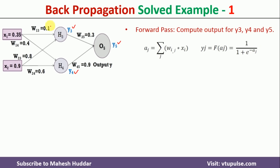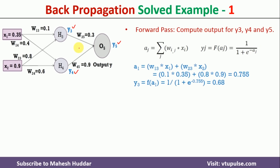We calculate the summation term at h3: a1 = w13 × x1 + w23 × x2 = (0.1 × 0.35) + (0.8 × 0.9) = 0.755. Then we apply the activation function: y3 = f(a1) = 1 / (1 + e^(−0.755)) = 0.68. This is the output at h3.